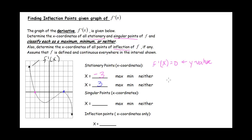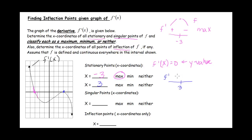Let's classify the stationary point at x equals negative 3. To the left, the first derivative is positive, and to the right it's negative. Projecting back to the original graph of f: it's going up, then has a zero slope, then goes down — so this is a maximum. Now at x equals 3: to the left the first derivative is negative, and to the right it's also negative. The original graph is going down, leveling out, then going down more — so this is neither a max nor a min.